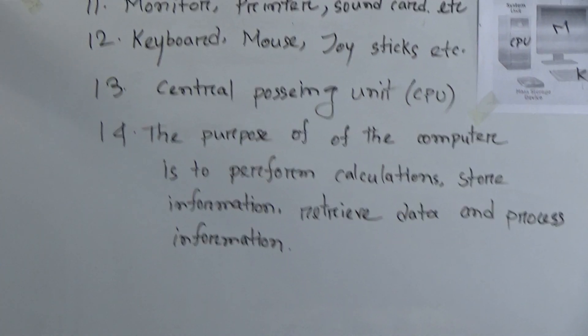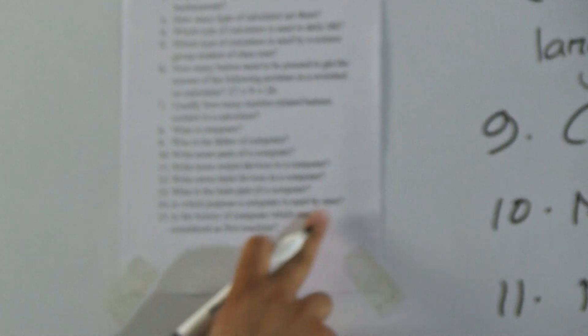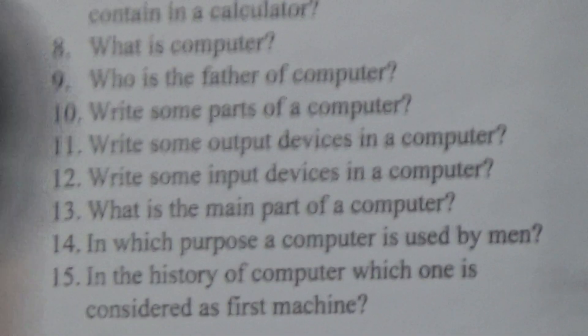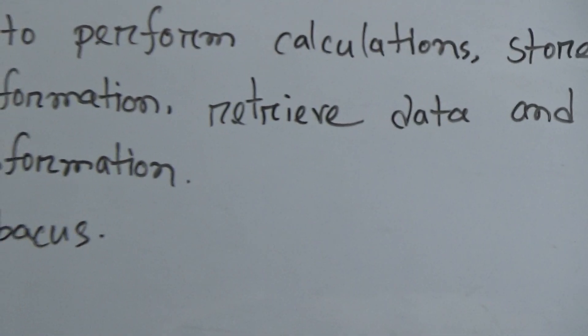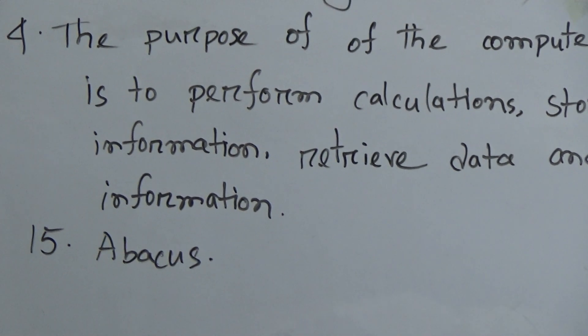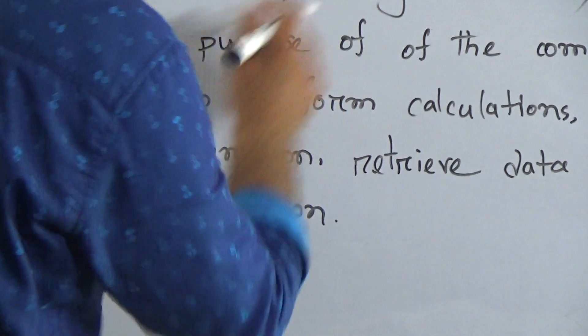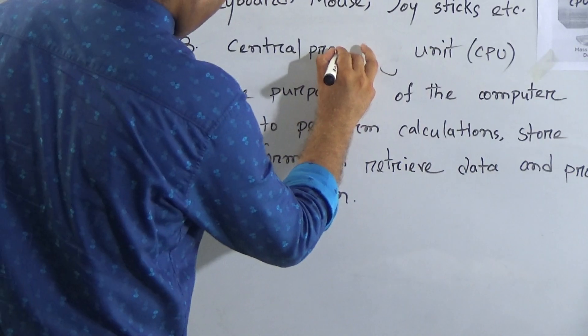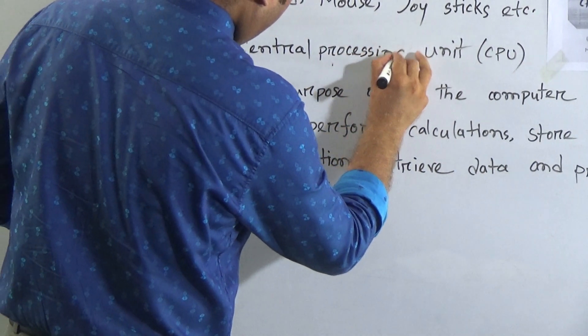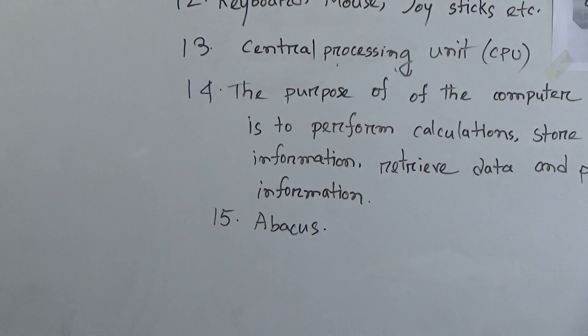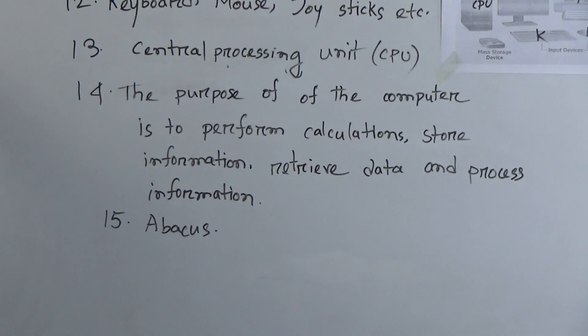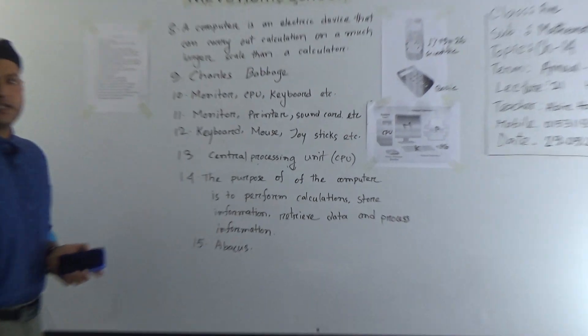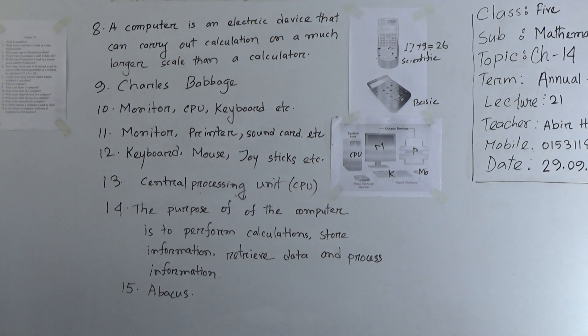And number 15, in the history of computer which one is considered as first machine? So the answer will be abacus. Abacus is the first machine in the history of computer. So from 8 to 15 it is related with computer. My dear students, hope you understood. Practice it at your home more and more. See you soon and till then Allah Hafiz. Thank you.